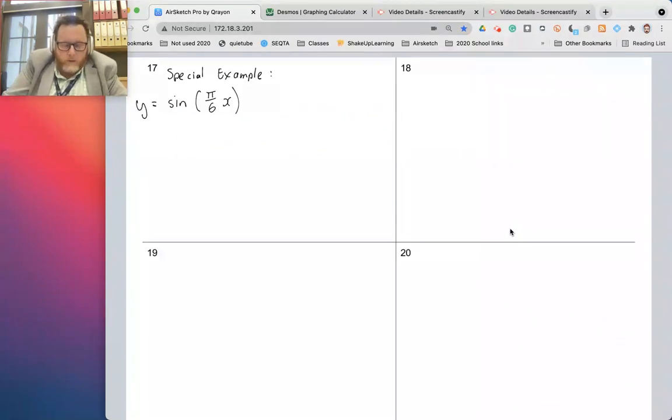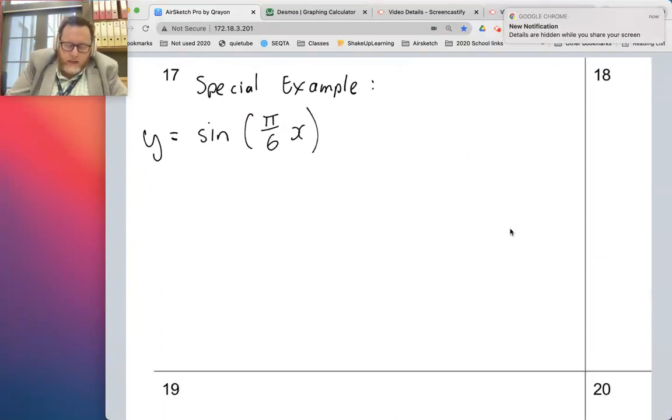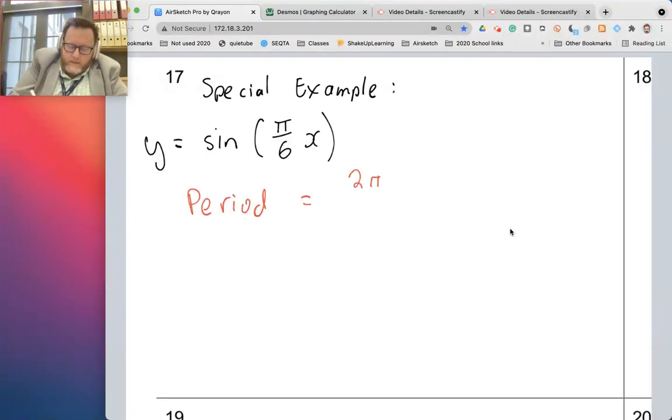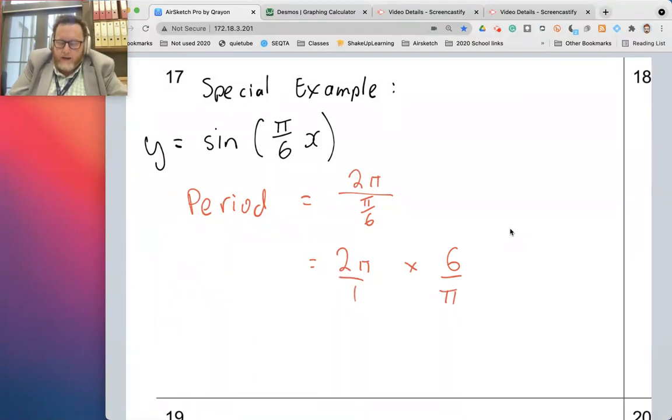One last example, then I'll leave you to it. In this instance, the period—the value of b, sorry—has a π in it. And it does interesting things to the actual period. So let's have a go. So a period is equal to 2π, that's the base period, over the new value π over 6. So that's 2π multiplied by 6 over π. I'll put this over 1 now. So you can see I've just done the division and flip in one action. Dividing by π over 6 is the same as timesing by the reverse.